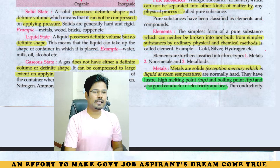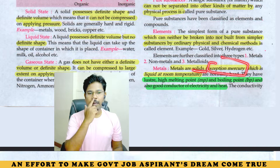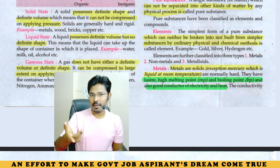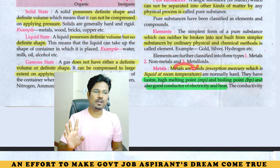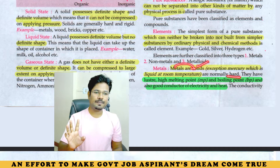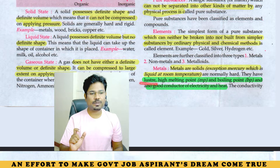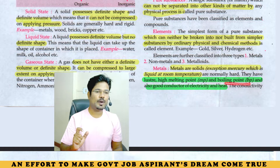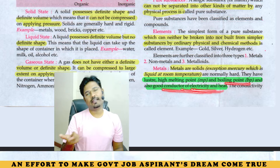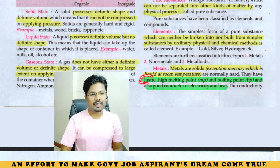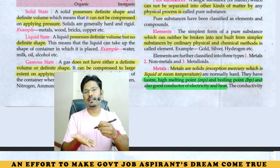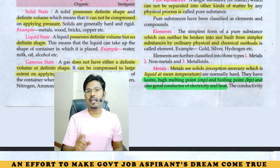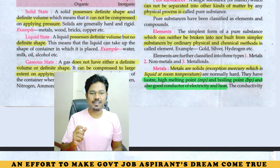Metals are solid. Mercury is liquid at room temperature — mercury is a metal but liquid at room temperature. Metals are normally solid, hard, have luster, high melting point, high boiling point, and are good conductors of electricity and heat. Luster means the capacity of a metal to reflect light or sunlight.